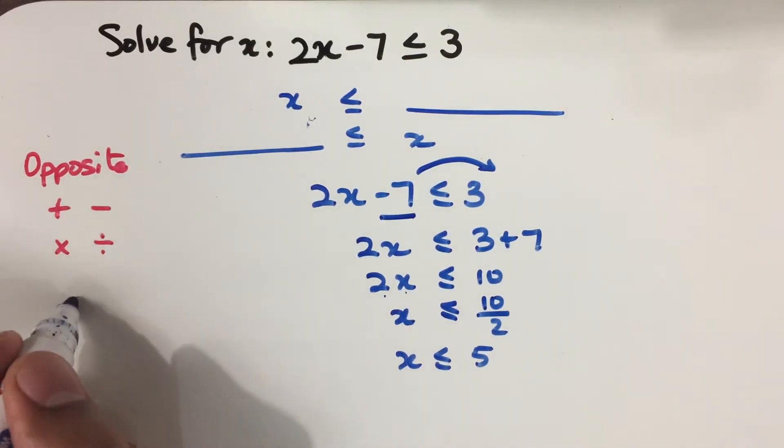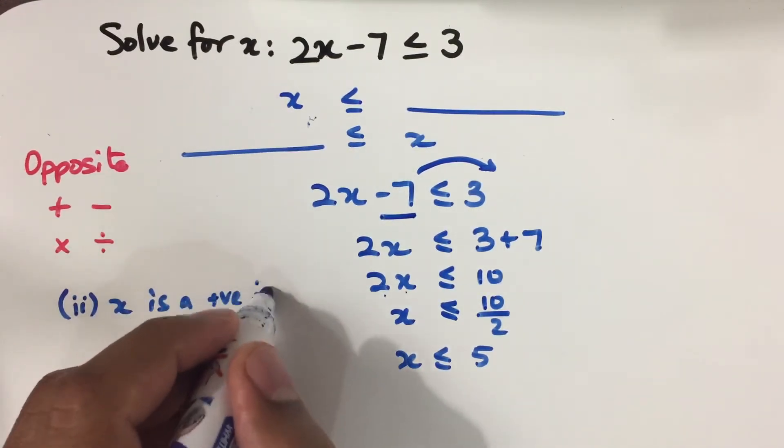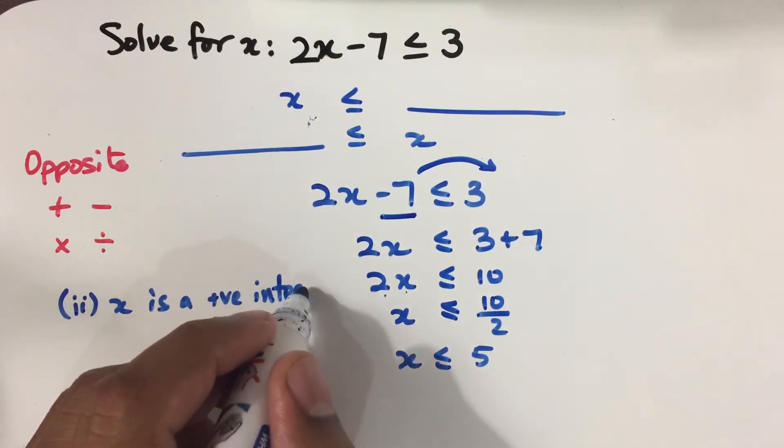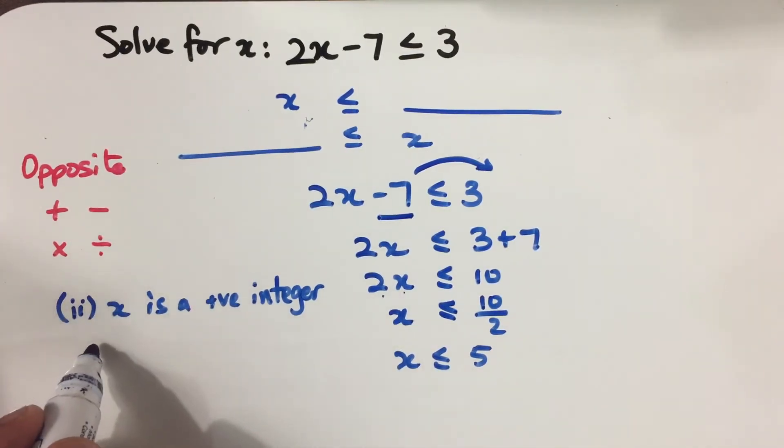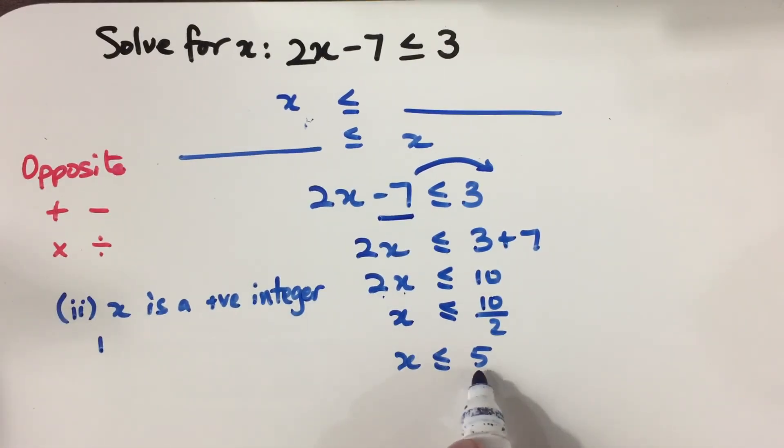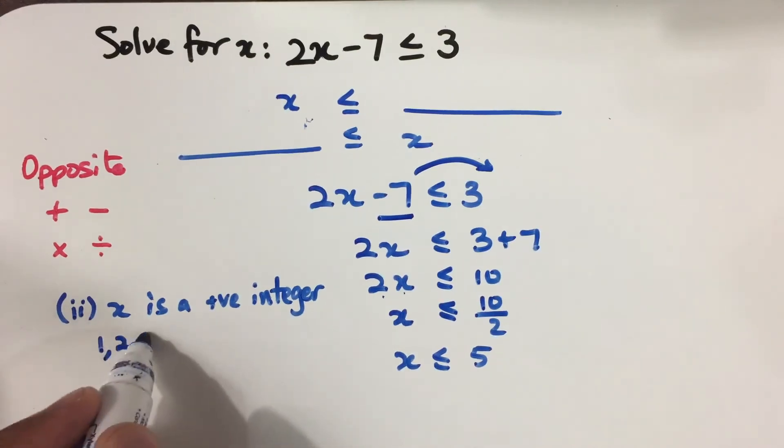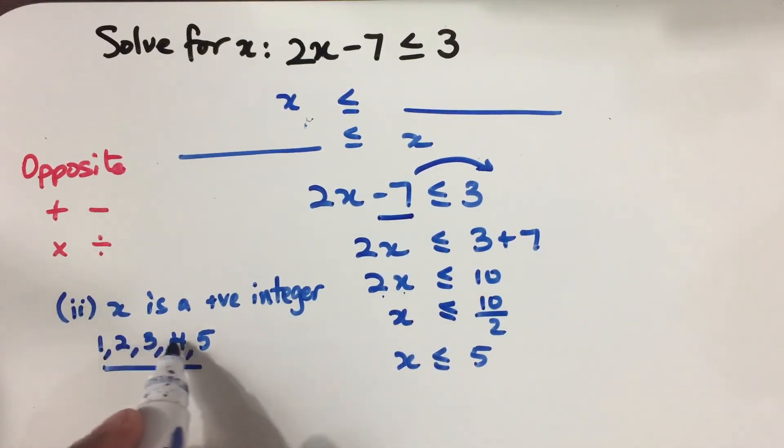Part 2 of this question says that x is a positive integer. Now an integer is just a whole number. And if it is positive, then that means x can be 1. Now they say that x is less than or equal to 5. So x can be 1, 2, 3, 4, and 5. This equals sign at the bottom here means that this is inclusive of 5. Less than or equal to 5. So then x can take on the values 1, 2, 3, 4, 5.